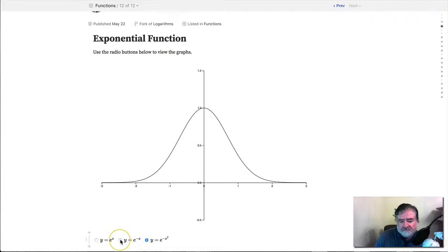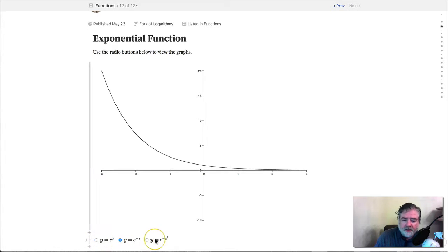So the students can just use the radio buttons here and look at the different curves and try to reason why they have these shapes. You know, as x gets larger, why does e to the negative x approach zero and so forth.